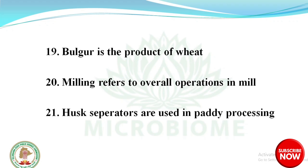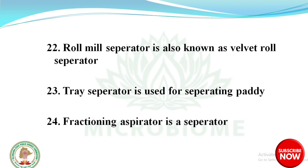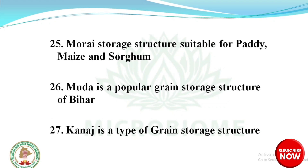Husk separators are used in paddy processing. Roll mill separator is also known as velvet roll separator. Rye separator is used for separating paddy. Fractioning aspirator is a separator. Morai is a storage structure suitable for paddy, maize and sorghum.